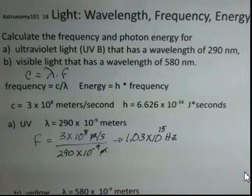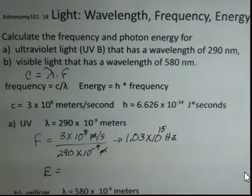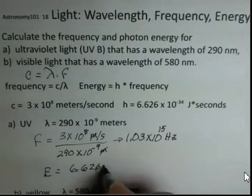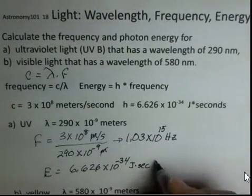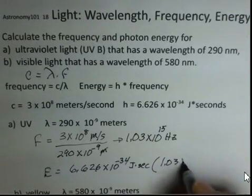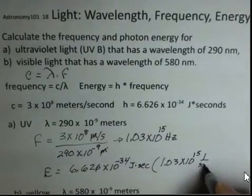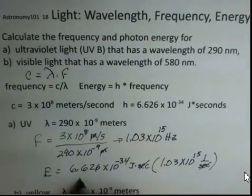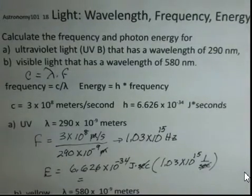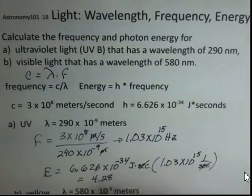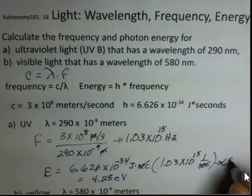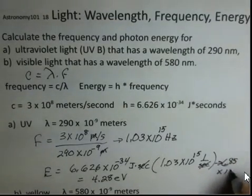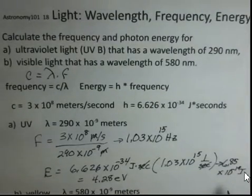So now that we have the frequency, we move on to calculate the energy. The energy is Planck's constant, 6.626 times 10 to the minus 34 joules seconds, multiply by the frequency, 1.03 times 10 to the fifteenth. And instead of writing hertz, I'm going to write 1 over seconds. And we can see that the seconds units cancel off. Again, you should use your own calculator. But I came up with 4.28 electron volts. I skipped a step on you. Sorry about that. If we multiply this out, we get 6.85 times 10 to the minus 19 joules.